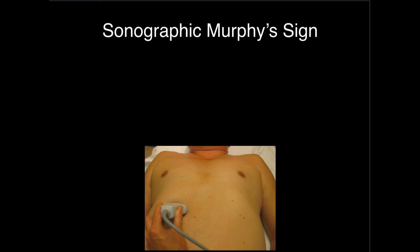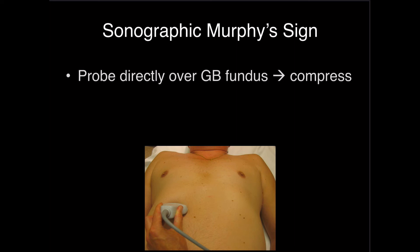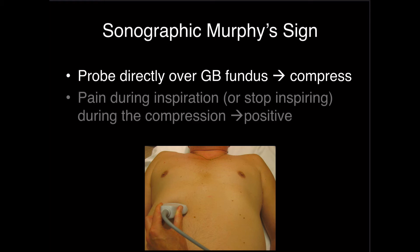Lastly, we'll talk about the sonographic Murphy sign. We all know the physical exam Murphy sign, where compressing the right upper quadrant and eliciting pain or lack of inspiration is a positive finding. The sonographic Murphy sign is where we place the probe directly over the gallbladder fundus — finding the spot where the gallbladder is closest to the surface — and compress right there. We're looking for pain and specifically pain during inspiration or the inability to inspire due to pain, which we call a positive sonographic Murphy sign.